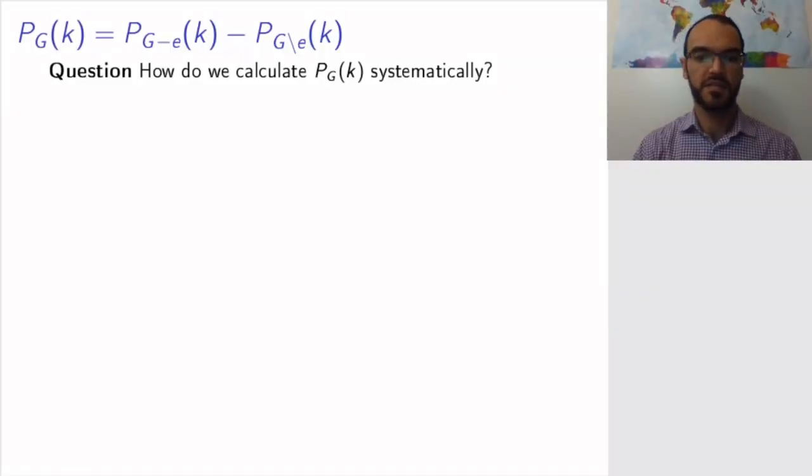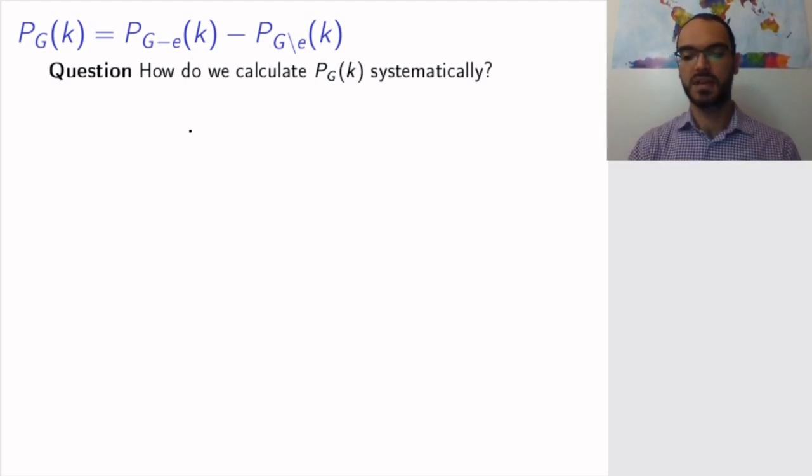So now we have this theorem that I've rewritten on the top of the page, and now we want to see how we can use it. So the answer is you take your graph that you want to find out P_G(k) for, and you reduce the number of edges by contracting and deleting edges until you get so easy graphs that you can see or that you have calculated before what their number of colorings is.